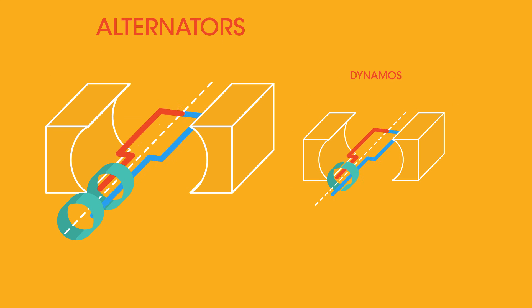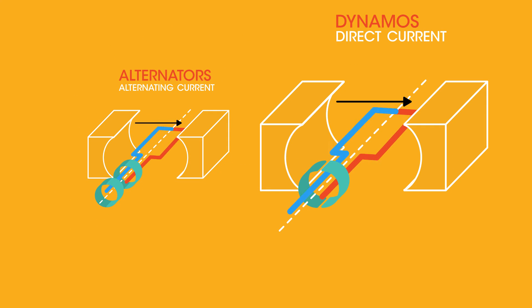So there we have alternators that generate alternating current due to having two commutators, and dynamos that generate direct current due to having one split commutator.